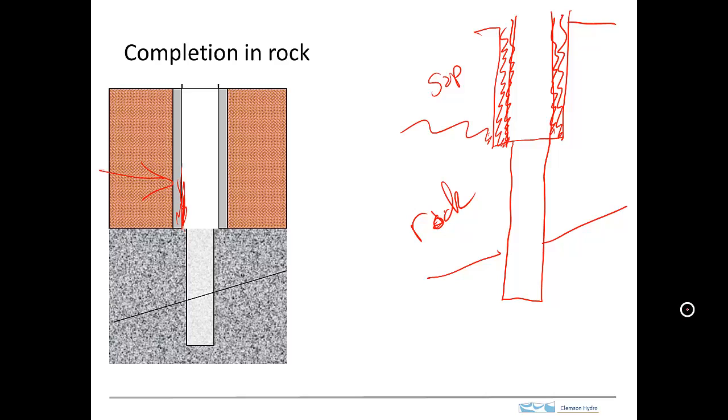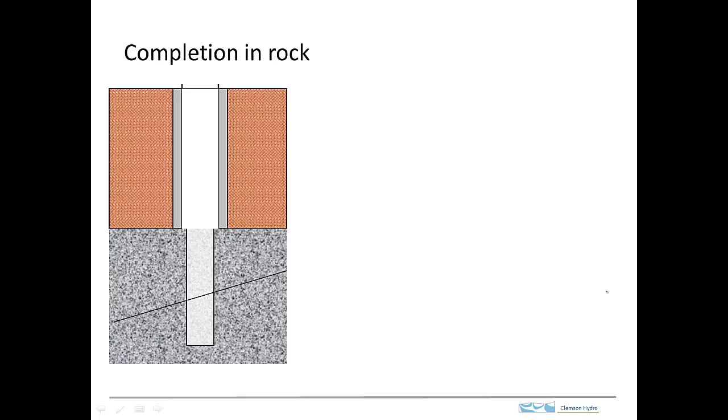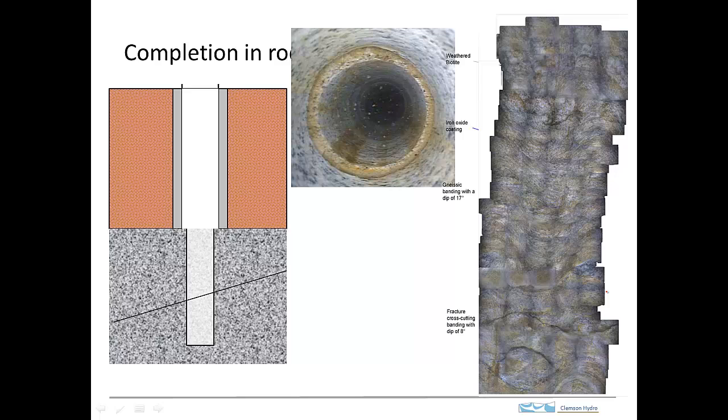The gray is the annular space with the seal, and then the casing is right here. And so as a result of completing wells this way, you can actually see the rock. If you complete the wells using the scheme that I showed you previously, then all you can see from the inside of the well is the casing or the screen. But here you can see the rock, and you can see the fractures, and that allows you to get an idea about what is in the subsurface.